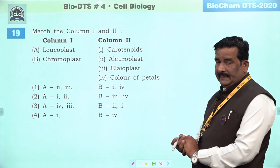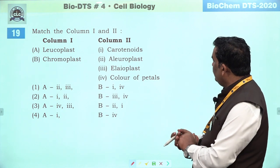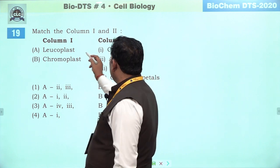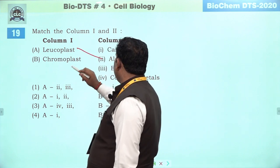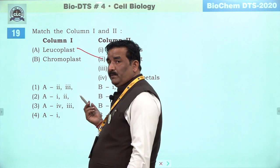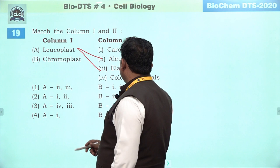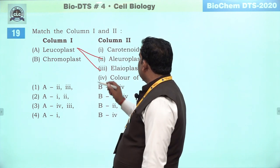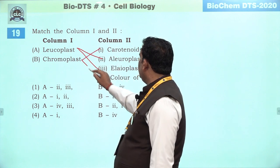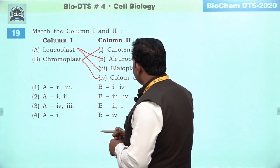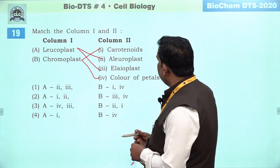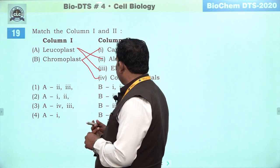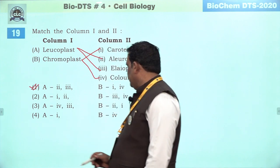Next question: match column first and second. Leucoplast ka jo connection hai woh storage se hai. Leucoplast is related with aleuroplast which is responsible for storage of protein. Elaioplast se bhi iska connection hai which is responsible to store fatty substances. Aur jo chromoplast hai woh carotenoid se connect hai aur color of petals se related hai. A mein second and third, B mein A and fourth. First is the right answer.